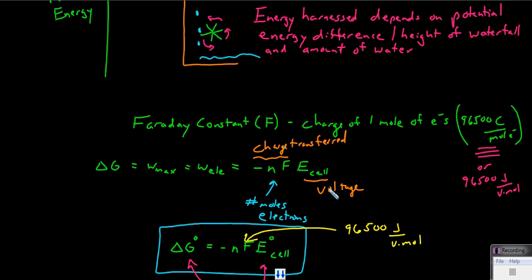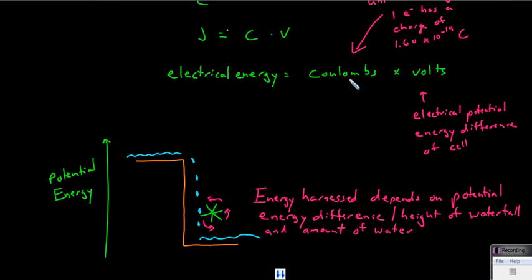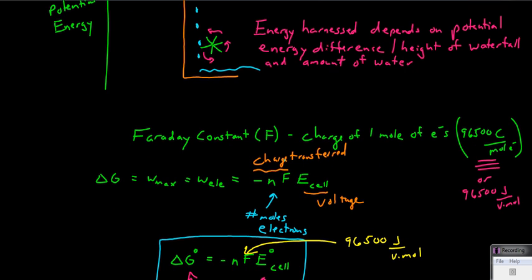Our E of the cell is the voltage of the cell. We saw that electrical energy was equal to the charge times the voltage. So here, the electrical energy is equal to the charge, N times F, times the voltage, E.